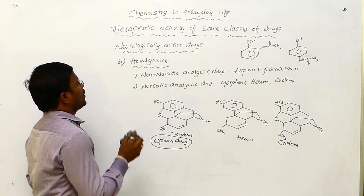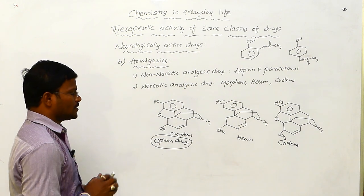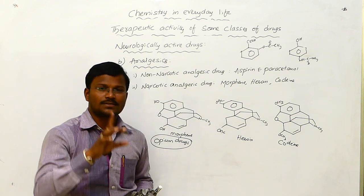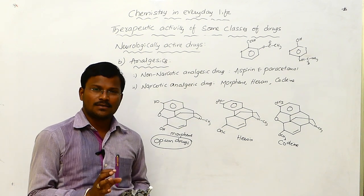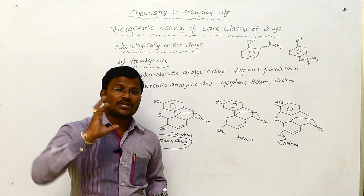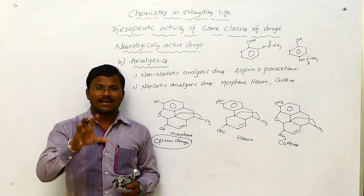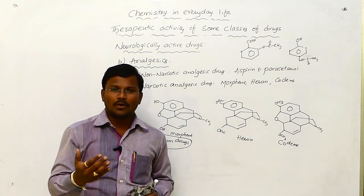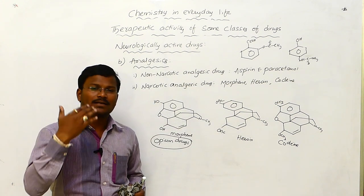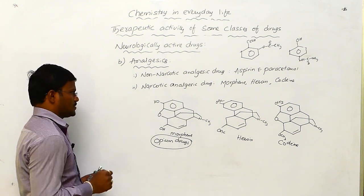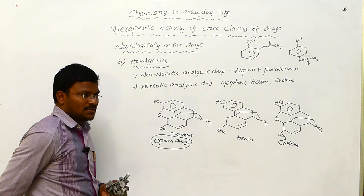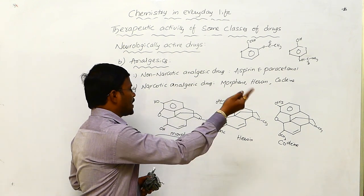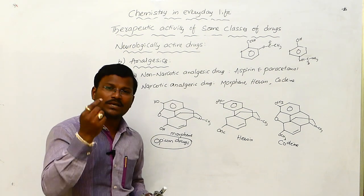This is about neurologically active drugs. Once again, the two types of drugs under neurologically active drugs are: number one, tranquilizers — those chemical substances which affect mood, stress, anxiety, and simple or even severe mental disorders are called as tranquilizer drugs. And the second one is analgesic drugs, which are of two types: non-narcotic analgesic drugs and narcotic analgesic drugs.